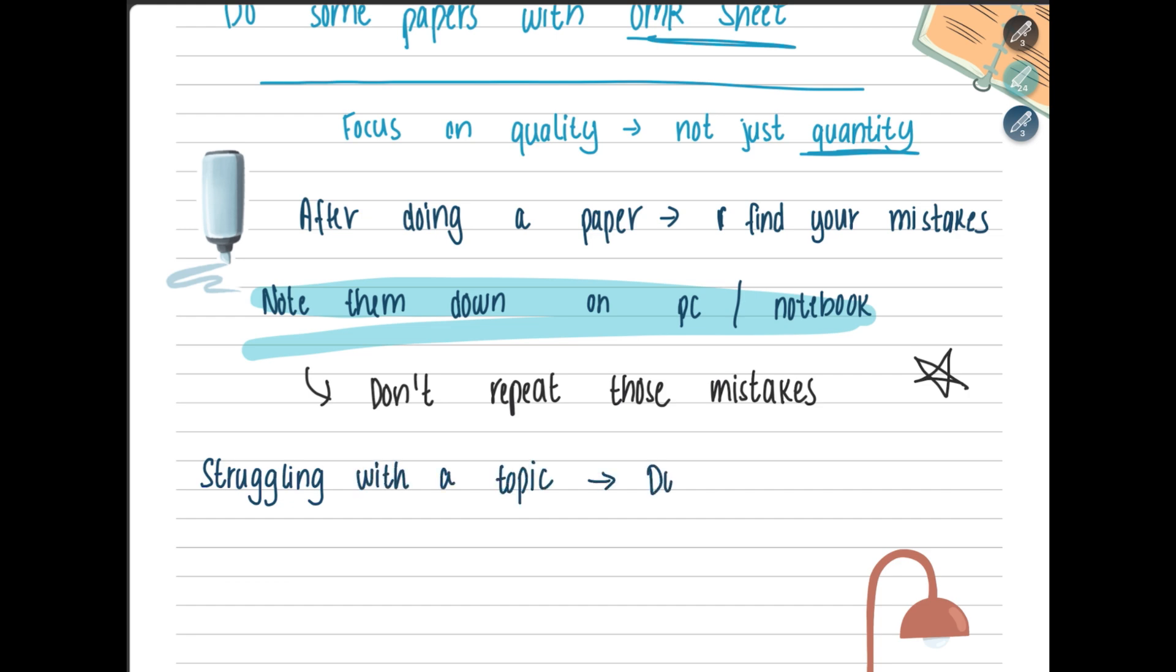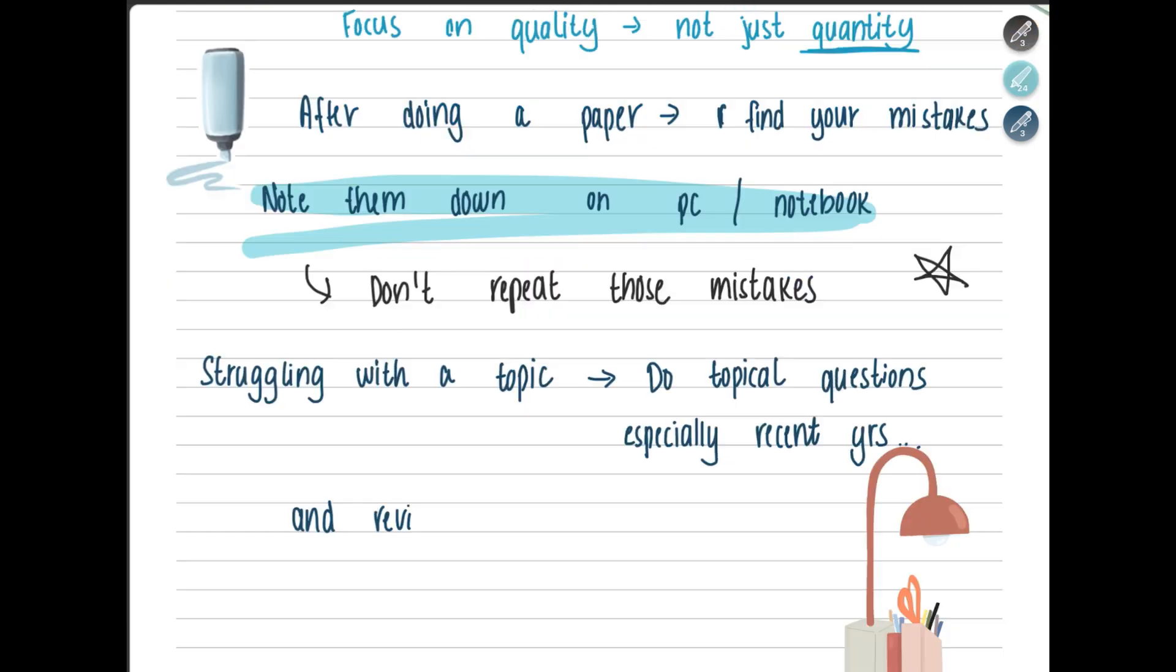If you are struggling with a topic that you keep on repeating the mistakes on, figure out what that topic is and do topical questions on that. And then, if you still struggle, it's a good idea to go back to the chapter and review it.